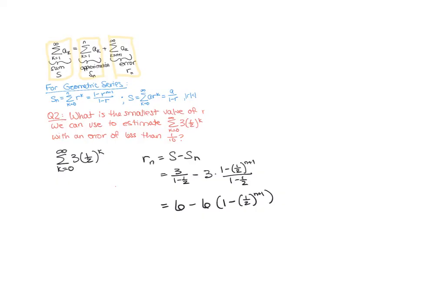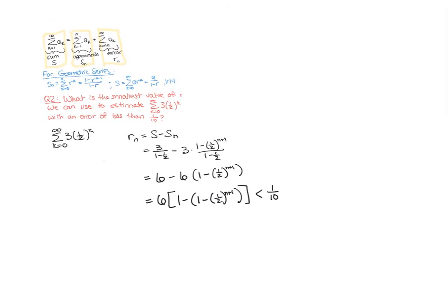That means you can actually pull out a six from the whole equation and you have six times the quantity one minus the quantity one minus the quantity one half to the n plus one. We would like that whole thing to be less than a tenth, so now we need to look at just this inequality.